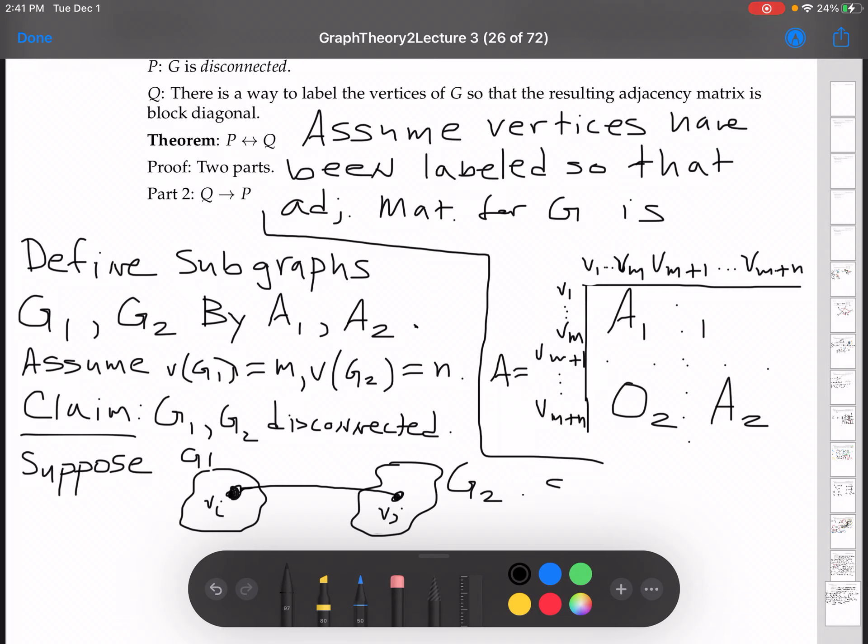Well, that means that 0₁ is not all zeros. Well, that's a contradiction. That's a contradiction because we get to assume Q. And so we get to assume that A is block diagonal, that 0₁ is all zeros. A contradiction. So G1 and G2 are disconnected, and that proves the result.